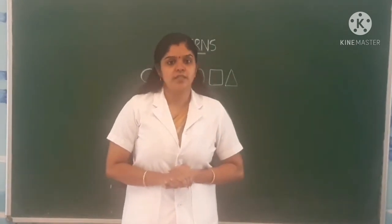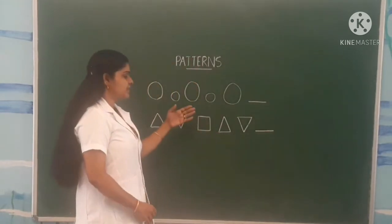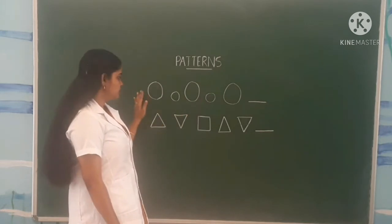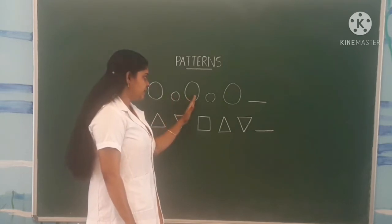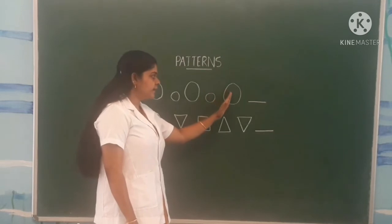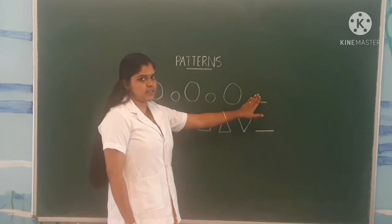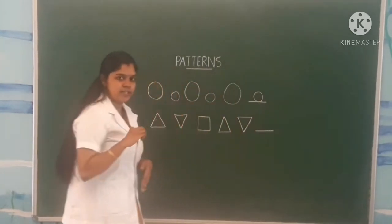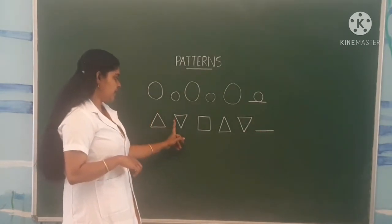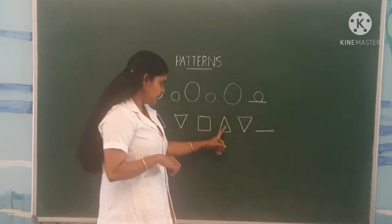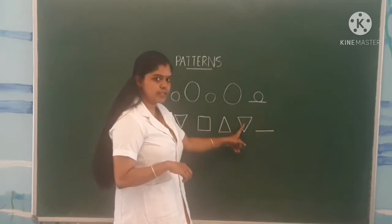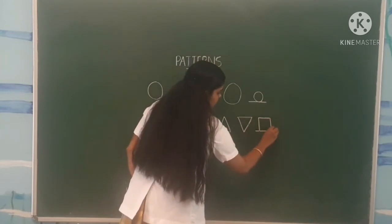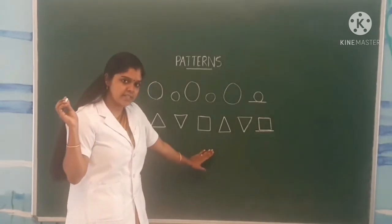Now let's do some problems on pattern. Here you can see 2 problems. The first one is pattern formed by shapes. So a big circle, then small circle, again a big circle, small circle, then big circle. So what will come here? The answer is small circle. We can draw a small circle here. So the next question: triangle and inverted triangle, then a square, again a triangle, then inverted triangle. Then again which shape will come here? Square. You can draw a square here. Is it right children?